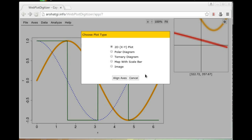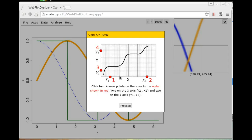In this tutorial, I will begin with a simple 2D XY plot and then move on to more complicated cases and other kinds of plots like polar diagrams and ternary diagrams. Once the image is loaded, select the axis type. In this case, we have a 2D XY plot. Click align.